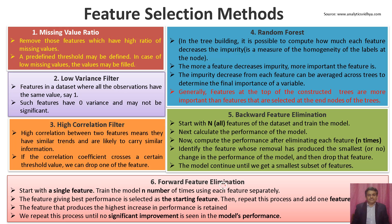The next feature selection method is forward feature elimination. It starts with a single feature and trains the model N times using each feature separately. The feature giving the best performance is selected as the starting feature. Then we repeat this process, adding one feature at a time. The feature that produces the highest increase in performance is retained. We repeat until no significant improvement is seen in model performance.